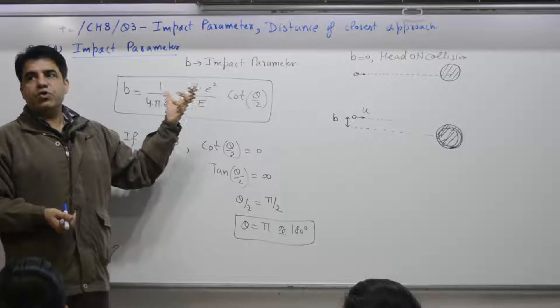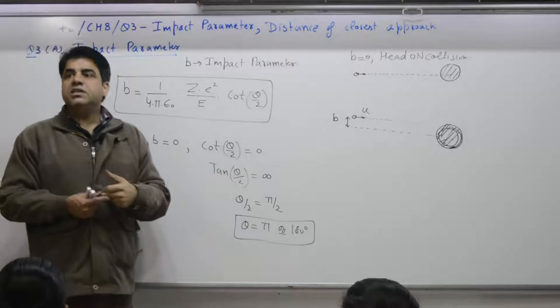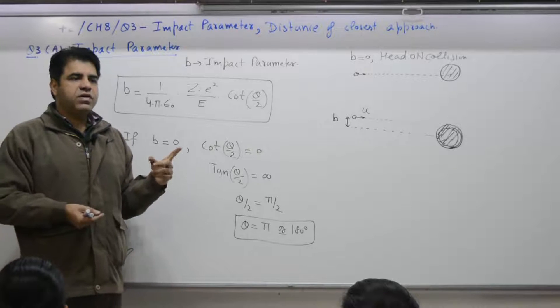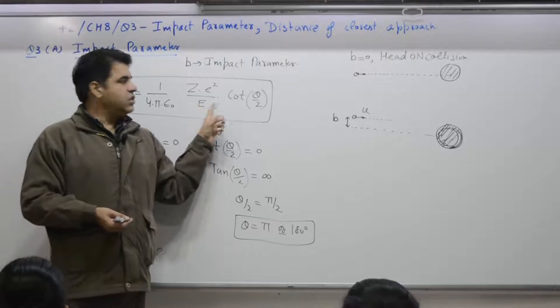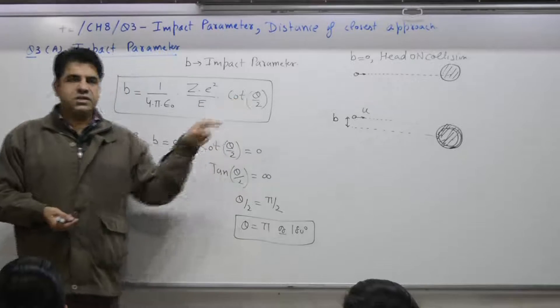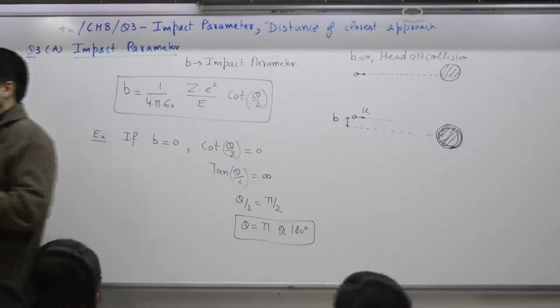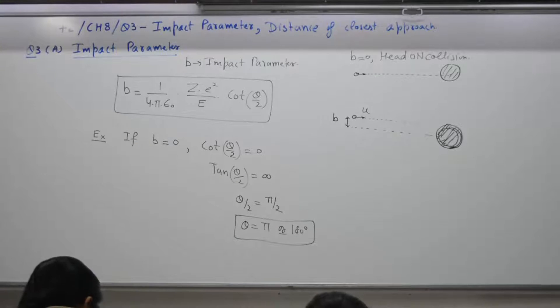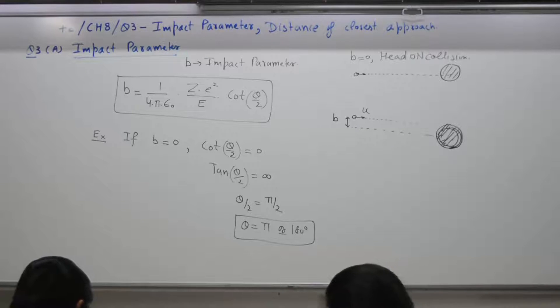Z represents number of protons, charge. E is charge of 1 electron, 1.6 times 10^-19. E is energy of a striking particle, alpha particle in this case.